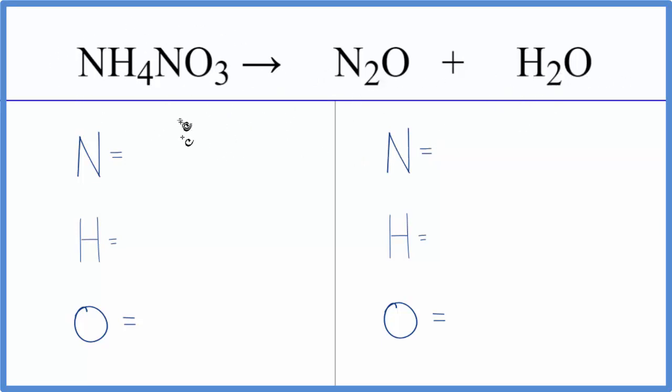We have one nitrogen plus we have another one here, so we have two nitrogen atoms. We have four hydrogen atoms and then three oxygen atoms.